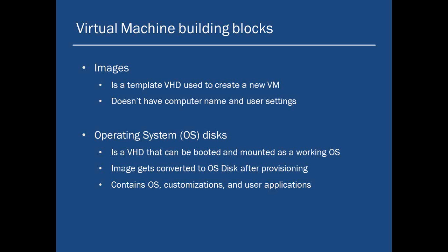This disk will have the OS customizations, the user customizations, and whatever applications you may want to install. So this is your operating system disk — the disk that is now ready with your OS customizations and user applications. This is the VHD file that can be booted from or mounted as a working OS. An image cannot be mounted as a working OS because it does not have the admin user or customizations, whereas the operating system disk can be mounted or booted as a working OS.